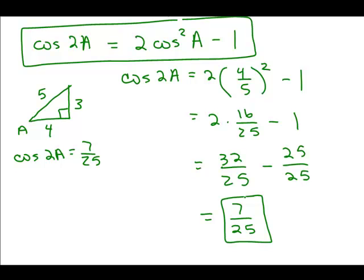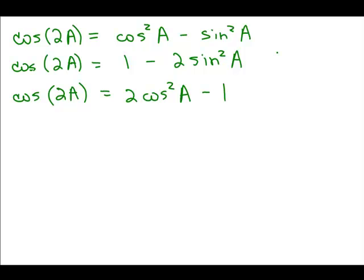We've computed cosine of 2A using all three formulas. I usually remember the first one — cosine squared A minus sine squared A — and derive the others by substituting from the Pythagorean identity. Which one you use depends on your information: if you only know sine of A, use the second formula; if you only know cosine of A, use the third. If you know both, any of them work.